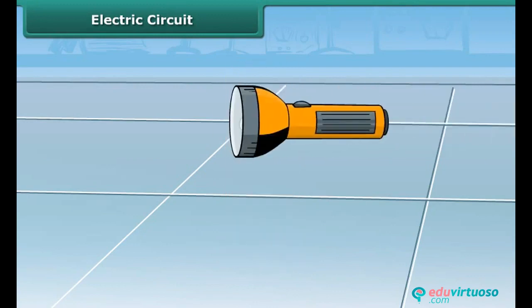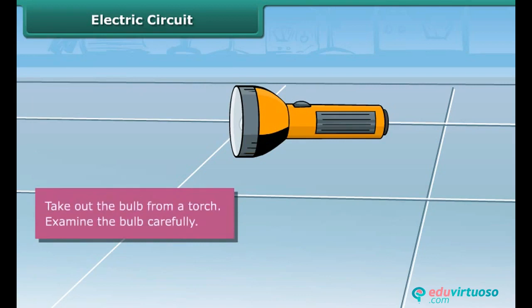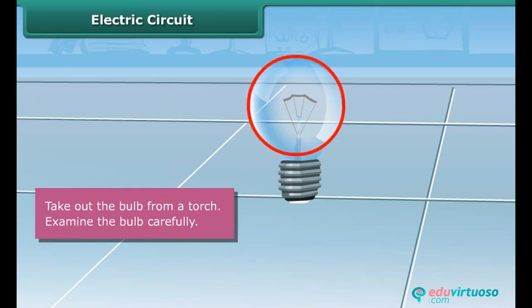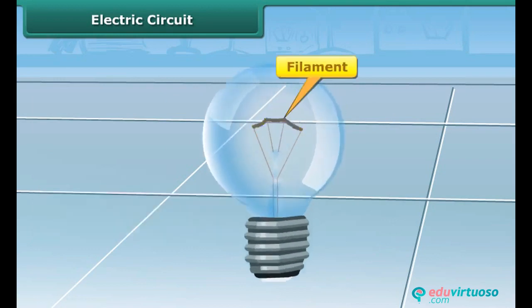Let us know how the bulb in a torch glows. Step 1: Take out the bulb from a torch. You can see that the bulb is a small globe of thin glass inside which a coiled filament is fixed on two thick wires.